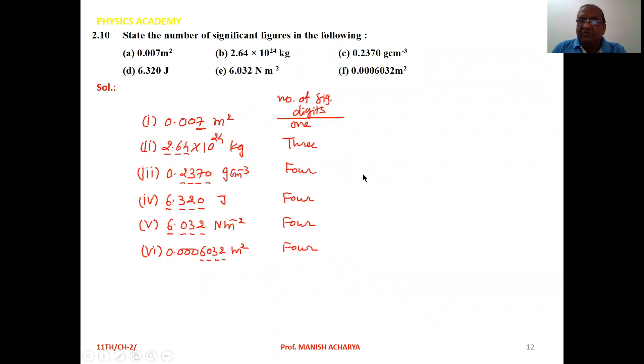Then 6.320 J. Again the same thing. All non-zero and the zero trailing one, and here the decimal point is appearing. So again 4.